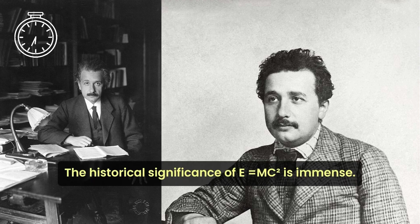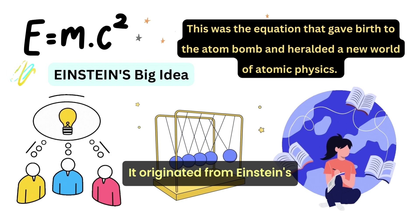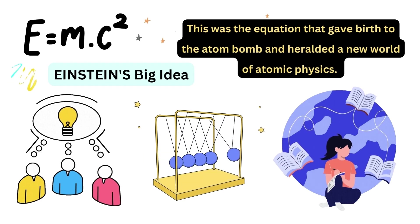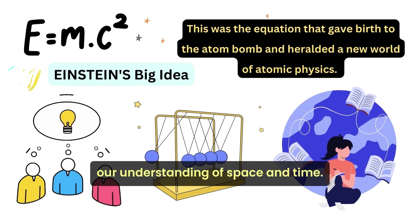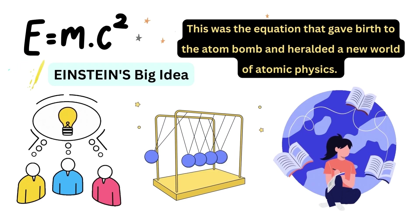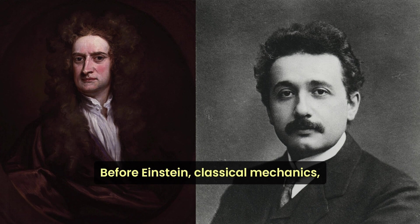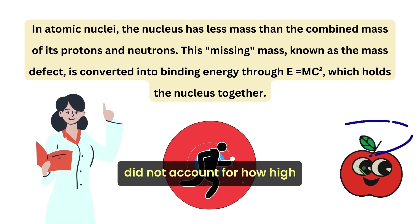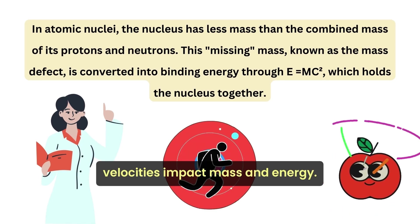The historical significance of E equals mc squared is immense. It originated from Einstein's groundbreaking work in special relativity, which dramatically changed our understanding of space and time. Before Einstein, classical mechanics, defined by Isaac Newton, did not account for how high velocities impact mass and energy.